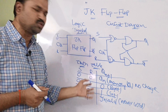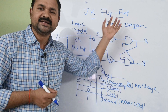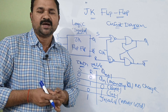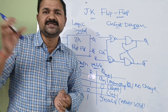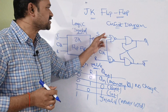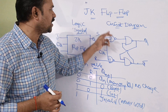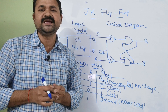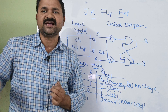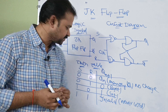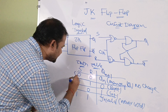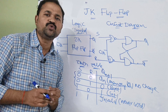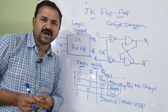Let us see the truth table. Already we have seen the circuit diagram as well as truth table for SR flip-flop using NAND gate, so please refer that video. I will share that video link in the description as well as comments. Here, the first three cases of the truth table are similar to JK flip-flop only.